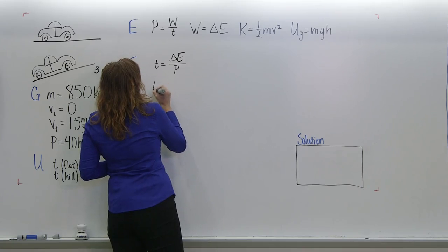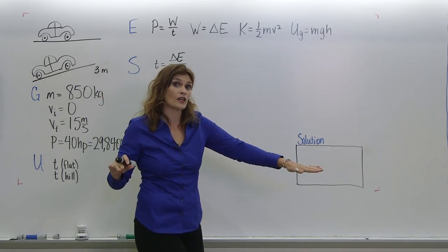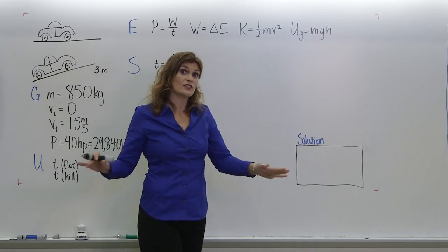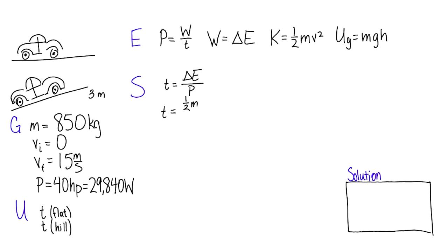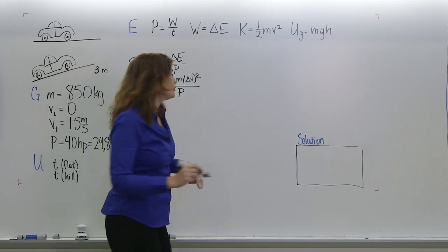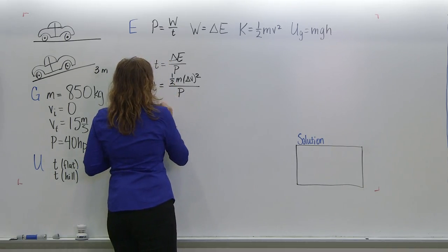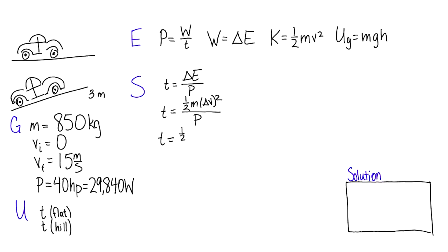So we've got only on a flat surface, so our gravitational potential energy is not changing—it's just the change in kinetic energy. So we can say one half m delta v squared divided by power. So then you plug in all you know: plug in 850, plug in 15 here, and you get that your time if it's just on a flat hill is 3.2 seconds.